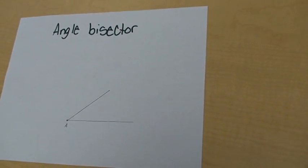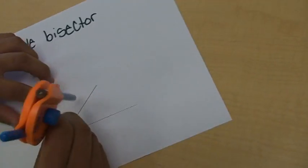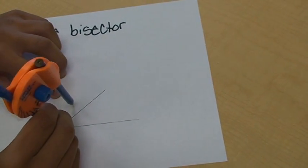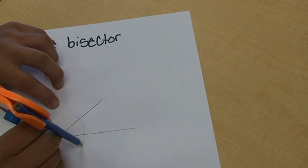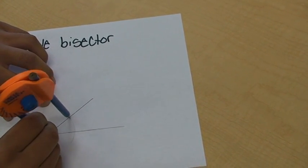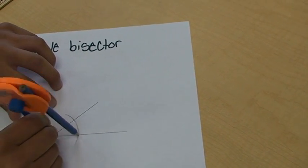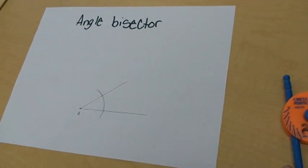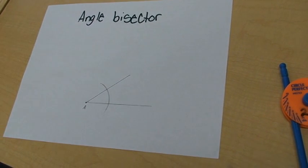Then put the compass on point A and make a semicircle from the second and first line. Label the intersections point B and C.